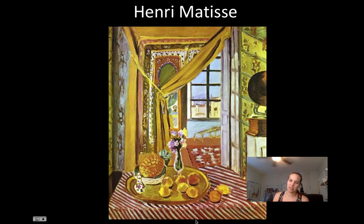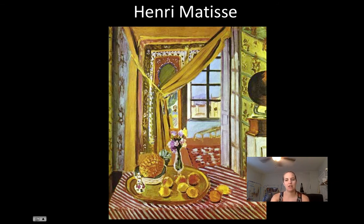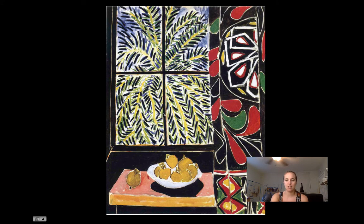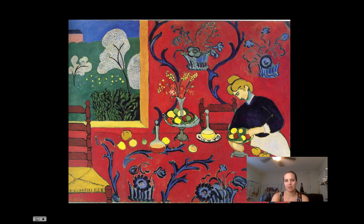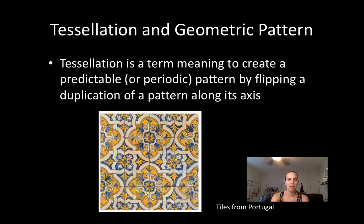Pattern can be intricate or simple and it can create a rhythm within a composition. Henri Matisse is a good example of that because he used a lot of pattern in his work. It's very rich in patterning — you can see that in the tablecloth down here and all over the place. Here is another example, and another example.